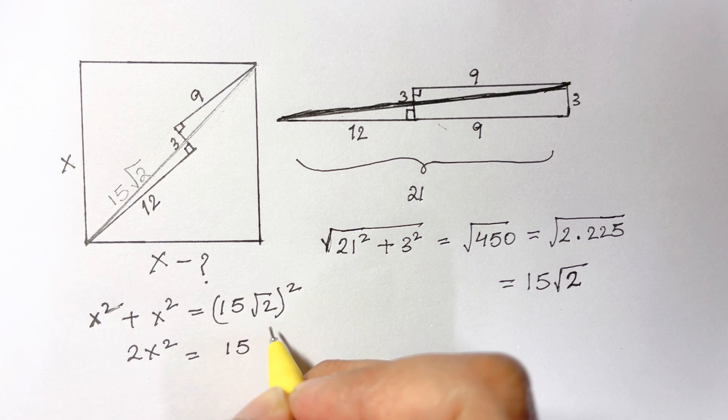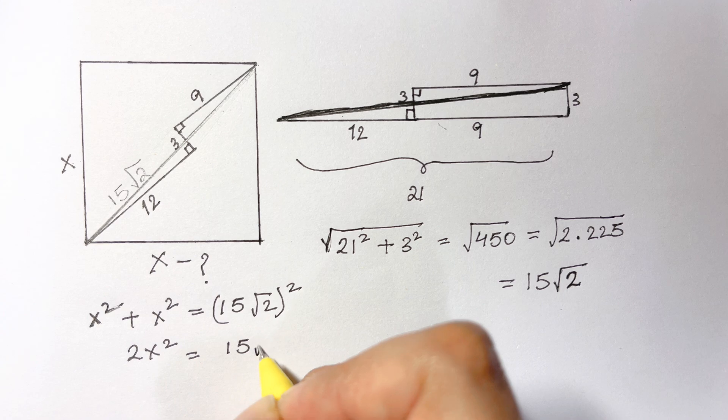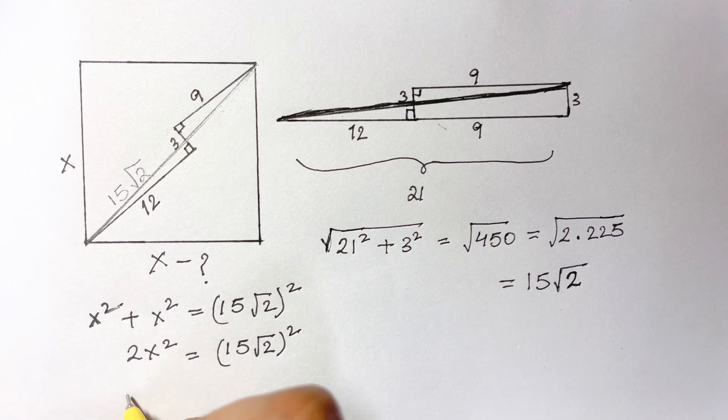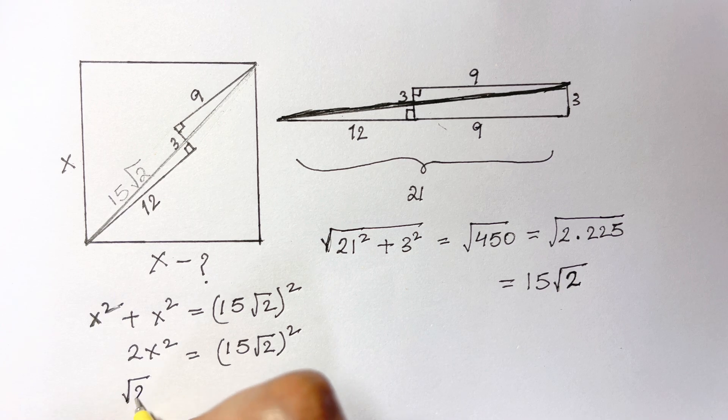Now if we take square root on both sides we have √2·x is equal to 15√2.